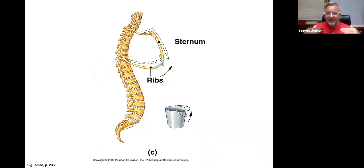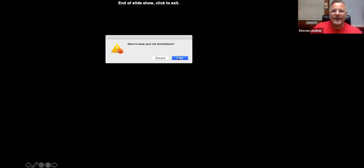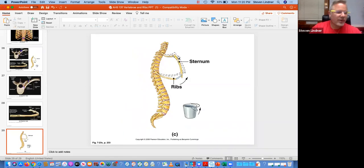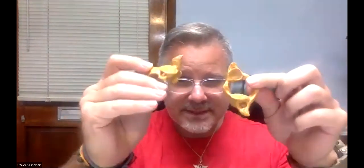That brings this section to a close at about an hour. We covered the skull — the main parts — and the cervical, thoracic, and lumbar vertebrae, including the atypical C1 and C2. Once you see the dens you know it's C2 — dens relates to dental, like a tooth — and the atlas (C1) sits right on top of it.